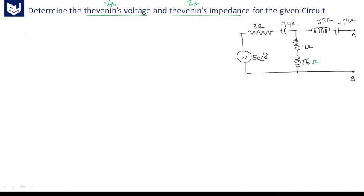The Thevenin's equivalent circuit is a voltage source in series with an impedance. The voltage source is Vth and the impedance is Zth.